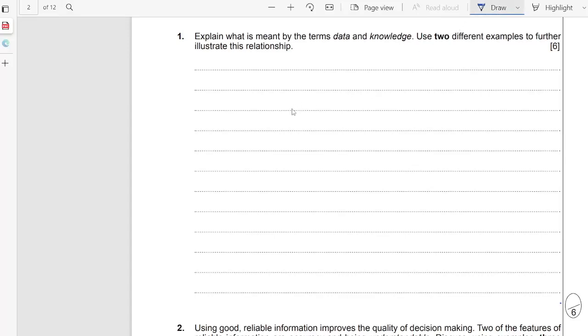So it says explain what is meant by the terms data and knowledge. We've got data and we decided that was raw facts and figures, so that would be worth one mark. We are asked to define knowledge, and we decided that was information with the rule and results. Most of the exam questions they'll say information rules and results applied, but that's absolutely fine.